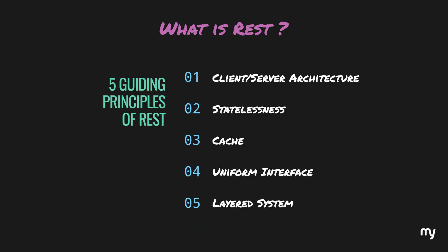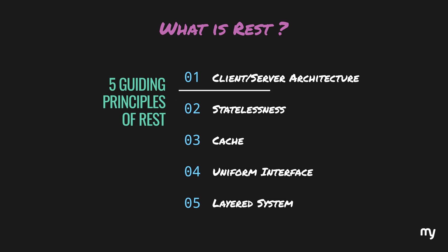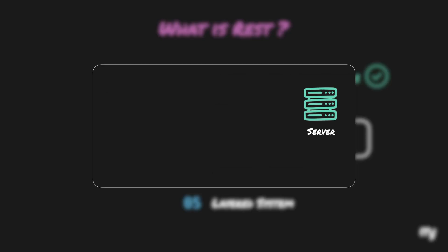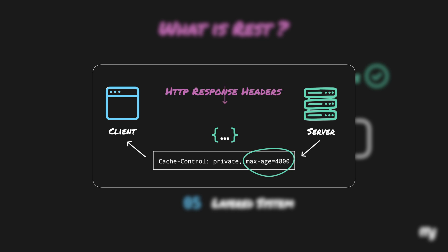Now that we know the guiding principles of REST, let's try to connect this with the topics we discussed earlier. Client-server architecture — HTTP already conforms to that. Same is the case with statelessness — HTTP is stateless. So for abiding by these two principles, HTTP is a really good fit. When we talk about cache, the server should be able to control which resource it allows the client to cache. The server can add a header with a key called cache-control, which can be read by the client or browser so they can see whether they are allowed to cache the resources, and if so, for how long. So this principle can also be easily implemented using HTTP response headers.